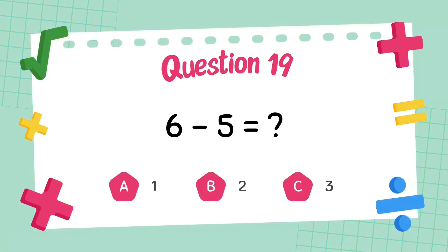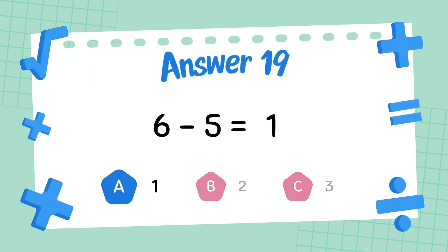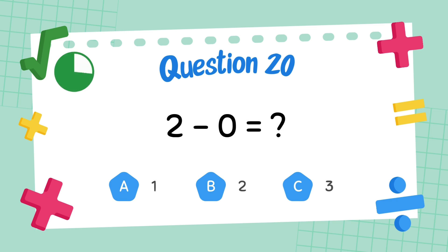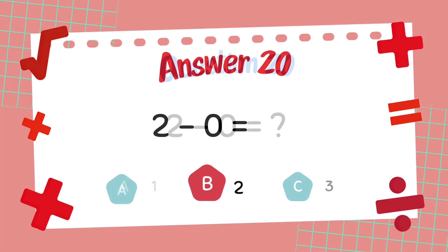What is 6 minus 5? The answer is 1. What is 2 minus 0? The answer is 2.